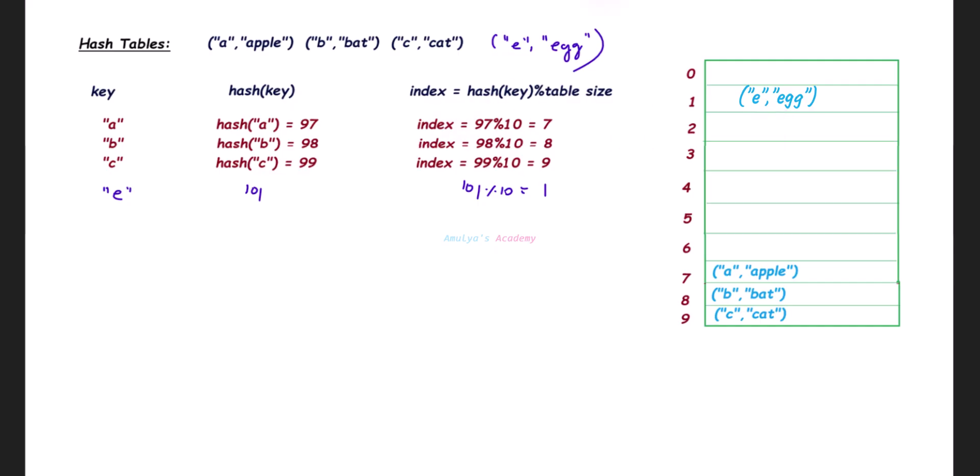Next, let's take another example. Let's add another key-value pair. Here I want to add this key-value pair. So the first step is find the hash code. For K, the hash value is 107, so 107 modulus 10 equals 7, but index 7 is already occupied.